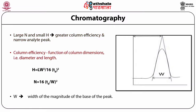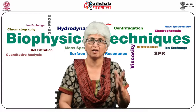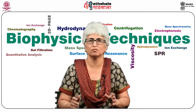Column efficiency is a function of column dimensions — diameter and length. Plate height h and plate number n can be expressed numerically as: h = L·w² / (16·tr²), where L is length of the column, w is width of the column, and tr is retention time. This formula can be rearranged for n: n = 16·(tr/w)². Here tr is retention time and w is the width at the base of a peak. n has no units. For a highly efficient column, n can be as high as 100,000 and the corresponding h can be as small as a few micrometers. Columns with high plate numbers are more efficient than those with lower plate counts.